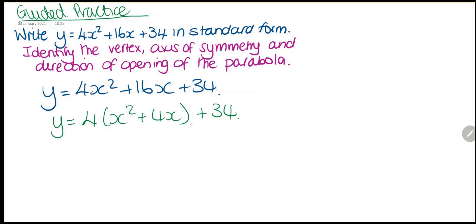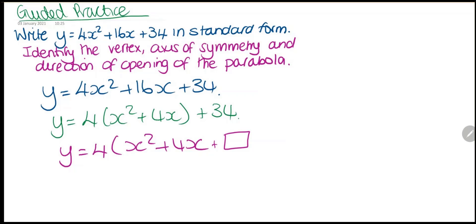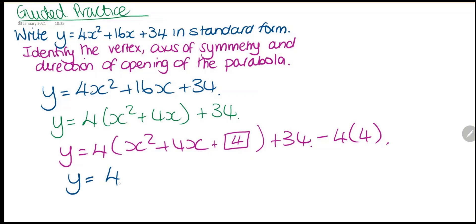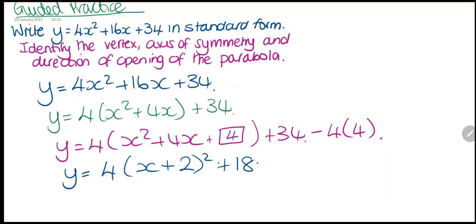We're going to complete the square. We have x² + 4x. 4 divided by 2 is 2, and 2 squared is 4. Because we've already added it, we need to subtract — and we multiply by 4, so that's 4 × 4 = 16. We rewrite as 4(x + 2)², and then plus 34 minus 16 gives us plus 18. This is now in vertex form.